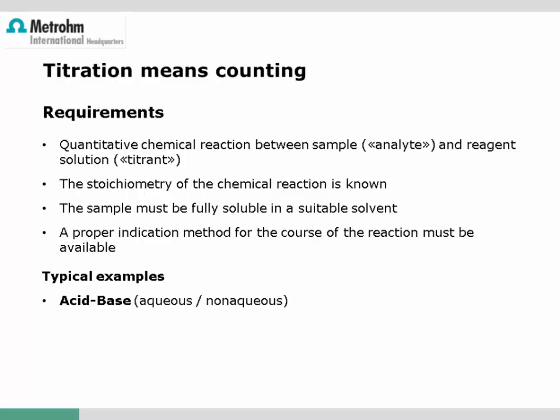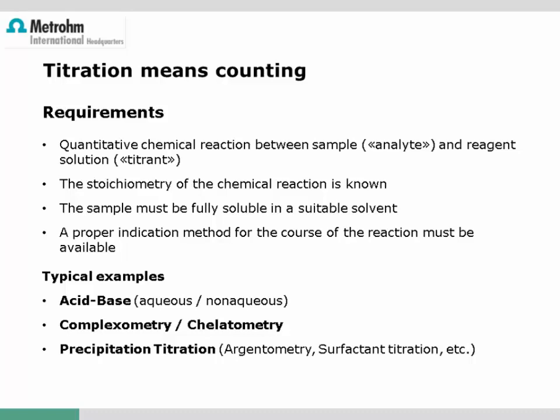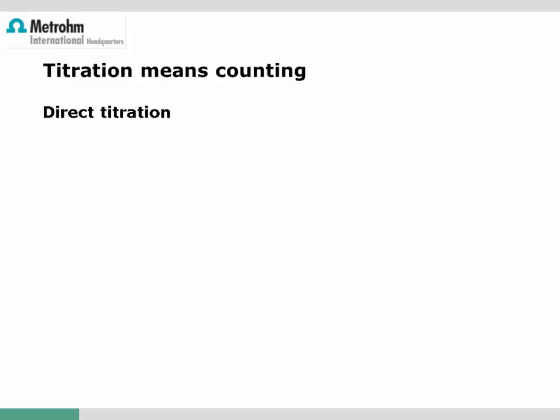The most common titration methods are acid-base titration, either in aqueous solution or in non-aqueous solvents; complexometry, which can be used for determination of metal ions like calcium-magnesium hardness using EDTA as titrant; precipitation titration, for example the determination of chloride using silver nitrate solution; and redox titrations, where the chemical reaction is a reduction or oxidation of the analyte. Typical examples are iodimetry, manganometry, or iodometry.